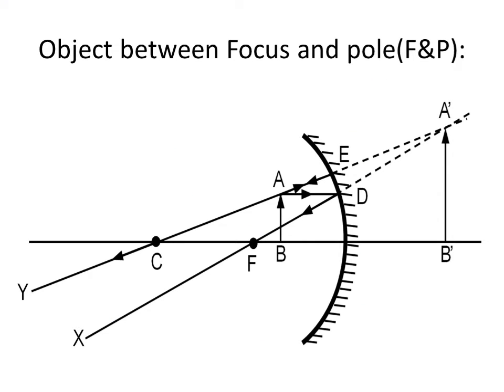Object between F and P. If the object is placed between F and P, that is at B, the actual rays don't meet anywhere but appear to meet beyond the mirror. So the image will be formed behind the mirror at A dash B dash, and the image will be larger in size, virtual, and erect.